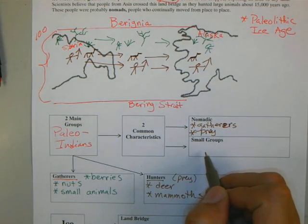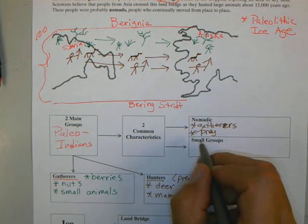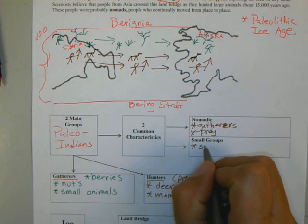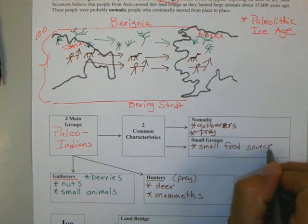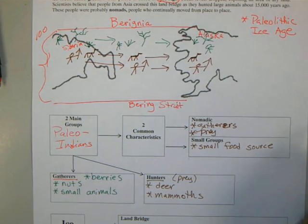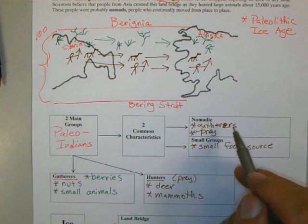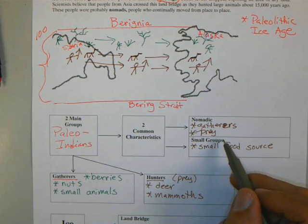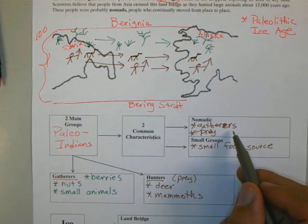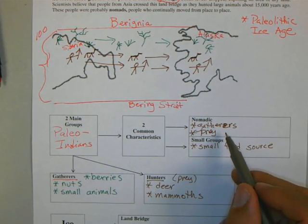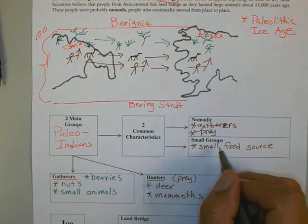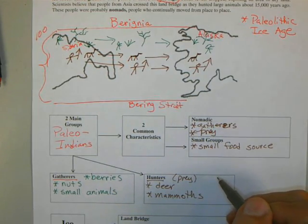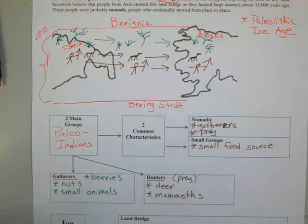Another characteristic is they travel in small groups, because of the small food source available. Like the gatherers — they find a bush of berries. If you have more than 50 or 100 in the group, they'll finish those berries right away. Small food, small groups. The hunters too — if they catch a rabbit, it can only go so far.